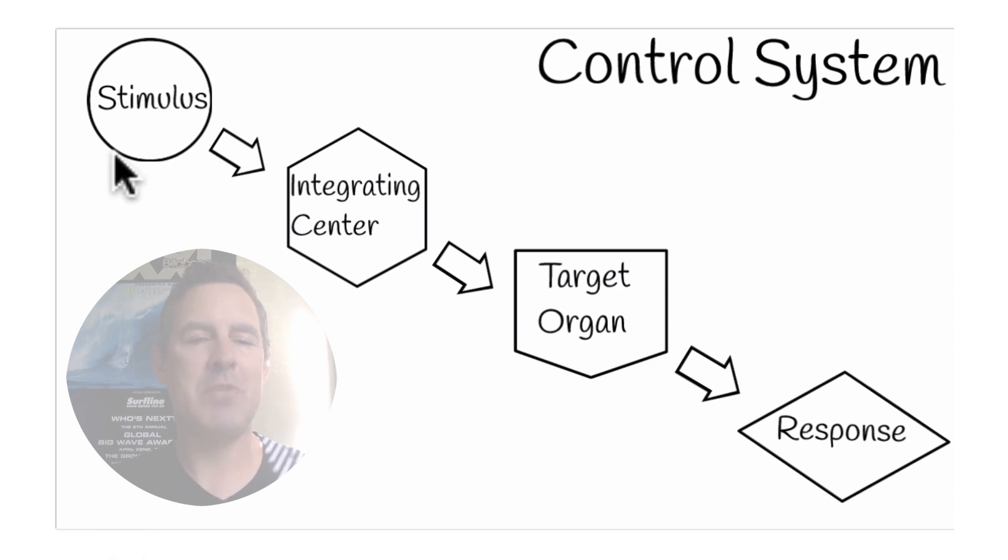So positive feedback, in short, is if we have a stimulus and that arrow is going up—that is to say it's getting out of its acceptable range—the body's response is to increase that stimulus even more. So it's going the same direction. That's why we call it positive.